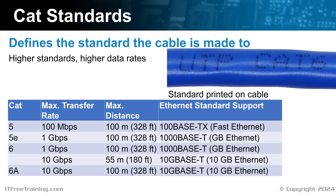CAT6a cables have the advantage over CAT6 cables in that 10 Gbps speeds can be transferred over 100 meters rather than only 55 meters. Unless you're running cables over 55 meters in length, this is not a concern. So for my network cables, I just buy a minimum of CAT6. If a cable with a higher CAT rating is available for a good price, it's still worth buying if you don't mind spending the extra money.